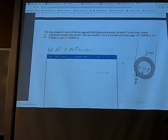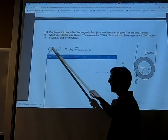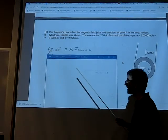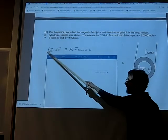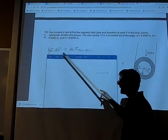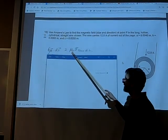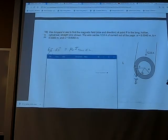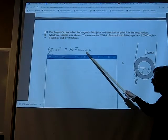Now here is Ampere's law. It says the line integral B dot ds around an imaginary closed loop, and so that little circle means a closed loop, equals a constant μ₀ times the amount of current passing through that loop, passing through your imaginary loop which we call the Amperian loop.